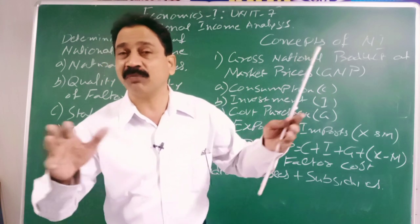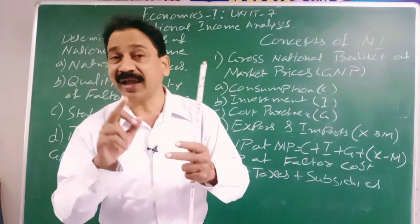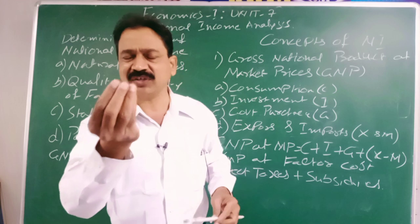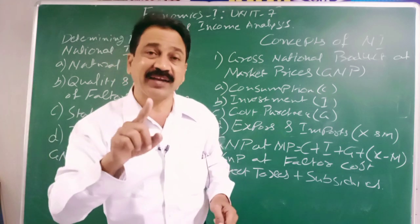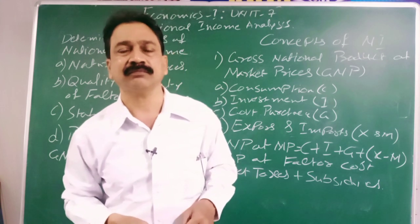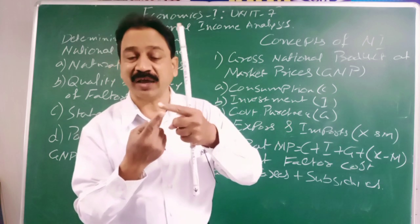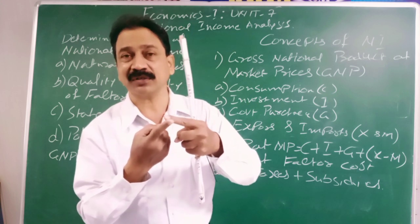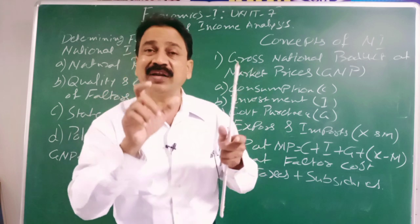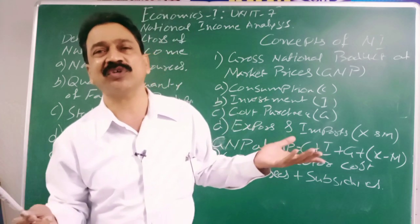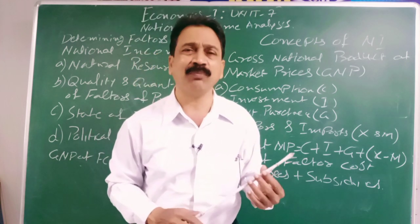Calculating national income is a long, large process. All goods and services with different quantities and qualities have to be multiplied by market prices. Take one product like rice — there are plenty of varieties, each variety must be multiplied by its price and all added together. Then you do this for every type of product and service. It is a very long and large process.